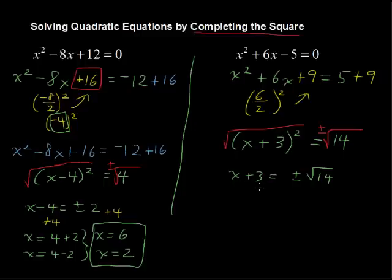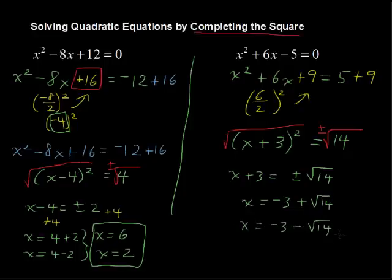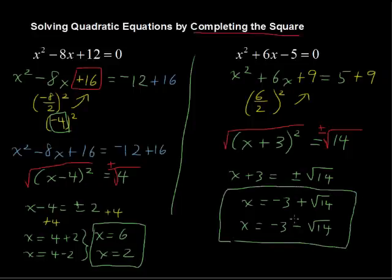And we get x plus 3 equals plus or minus the square root of 14. We are going to subtract 3 from each side, and we get x equals negative 3 plus the square root of 14. And we also get x equals negative 3 minus the square root of 14. Two distinct answers. Now, with a calculator, of course, you could get some approximation for those answers. But those are the exact answers that is in left in radical form. And that's the process for completing the square.